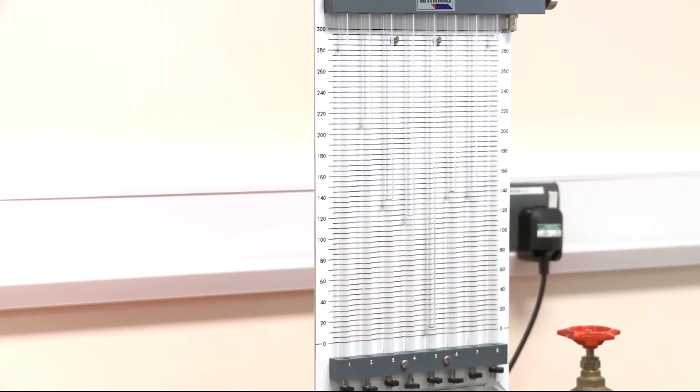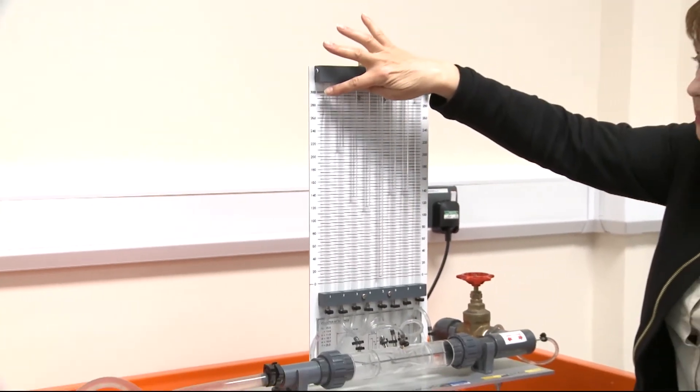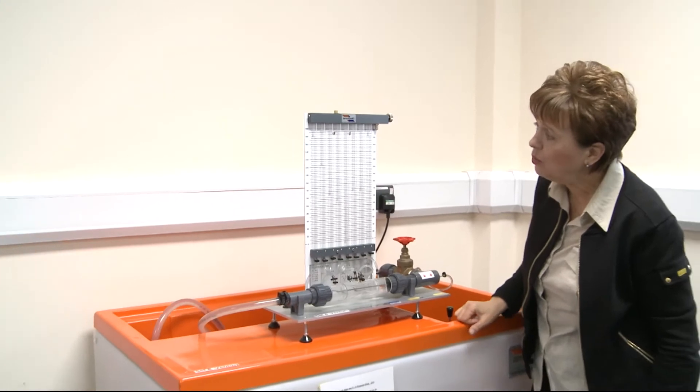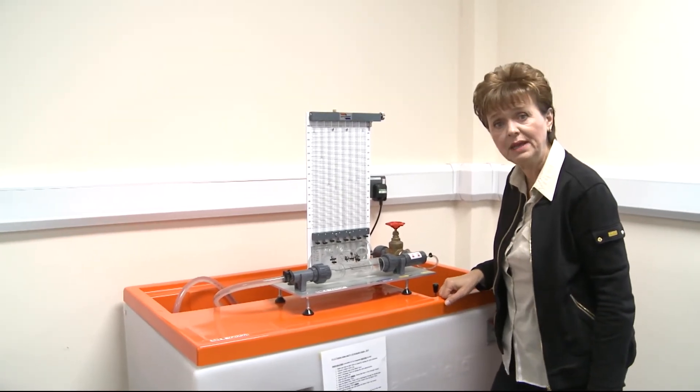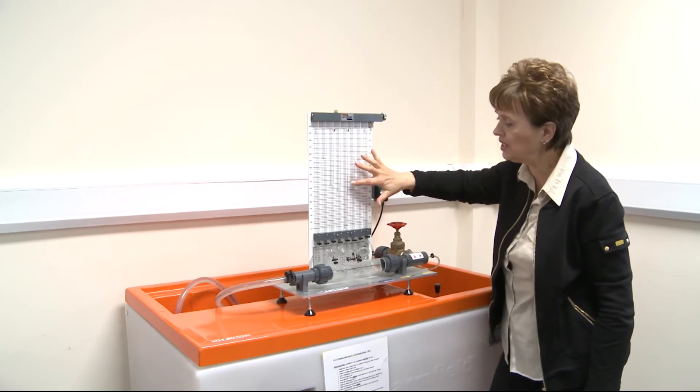And for this experiment, as I said, this is part number one, and we study variation of piezometric head. So I will do recordings of piezometric head for each tube from one to six. After that, we will measure flow rate.